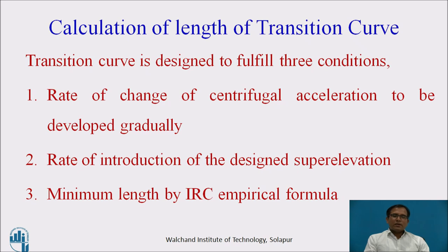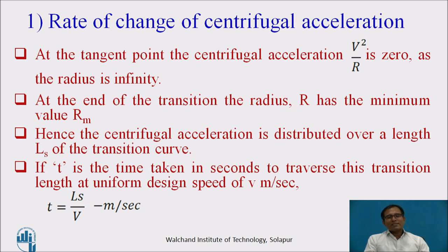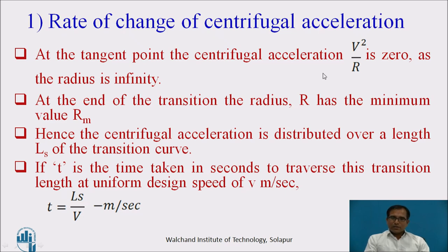Let us go one by one to find out the length of transition curve. The first condition is rate of change of centrifugal acceleration. We know that v² / R, the centrifugal acceleration, is 0 at the straight tangent point. The radius starts decreasing and centrifugal acceleration starts gaining value — increasing gradually while radius decreases gradually. So v² / R has to be introduced in the transition uniformly and gradually.